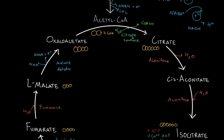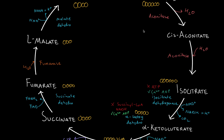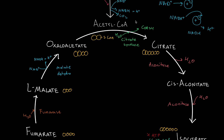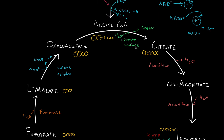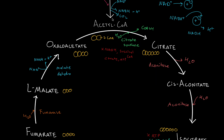The most important enzymes in the Krebs cycle are citrate synthase, isocitrate dehydrogenase, alpha-ketoglutarate dehydrogenase, and succinate dehydrogenase — the latter being complex two of the electron transport chain. Citrate synthase is inhibited by NADH, succinyl-CoA, citrate, and ATP. What promotes citrate synthase to continue is ADP.